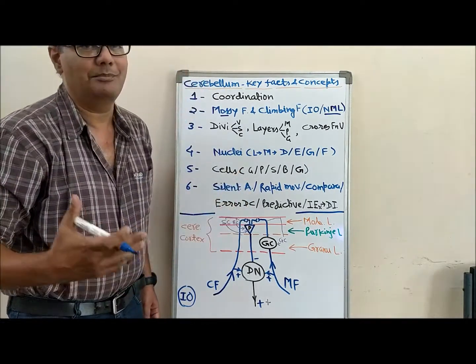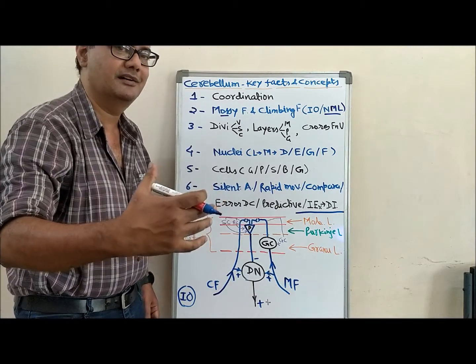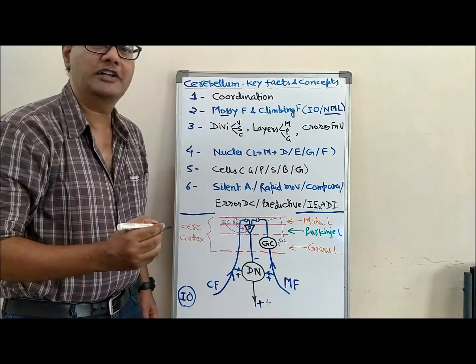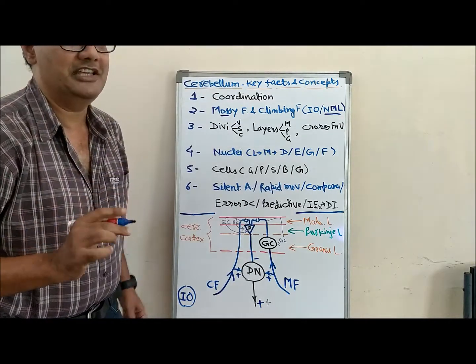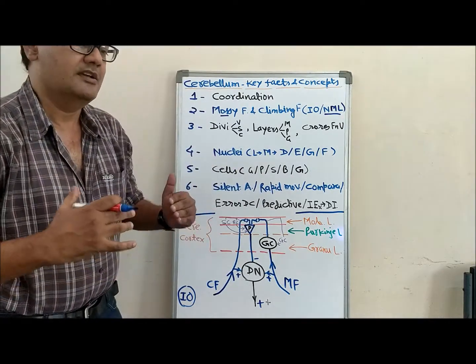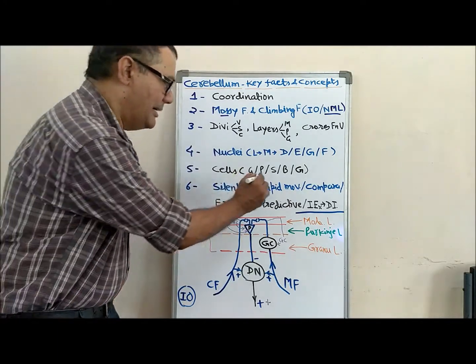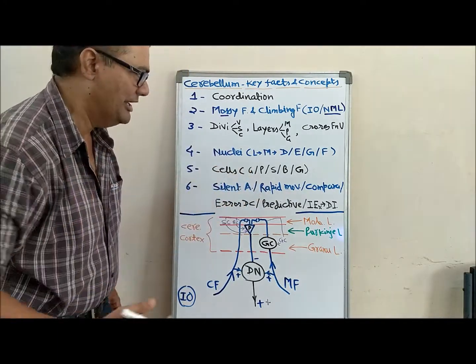It is called silent area, but this concept we will discuss in the next video. Cerebellum is always for rapid motor activity. Even without cerebellum, slow calculated movement can occur, but rapid movement is uncoordinated without cerebellum.